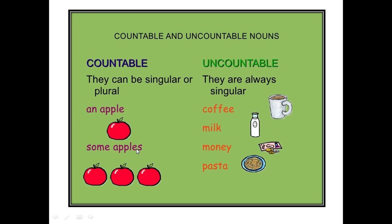Uncountable noun examples — they are always singular, like coffee, milk, money, pasta. Most people get confused with money, thinking that money is countable. Yes, a smaller amount of money is countable — 10, 15, 100, 1000 — but money is considered uncountable. We cannot count money because it has no limit. So these are the examples of uncountable nouns: coffee, milk, money, and pasta.